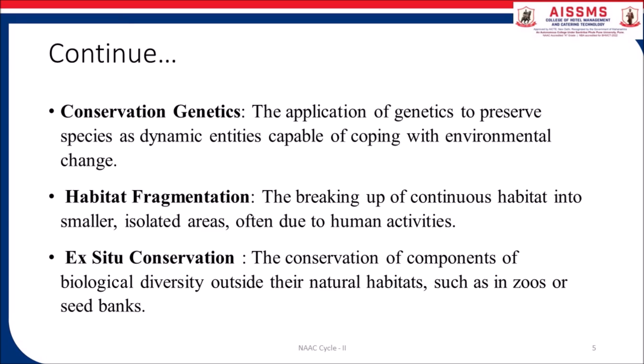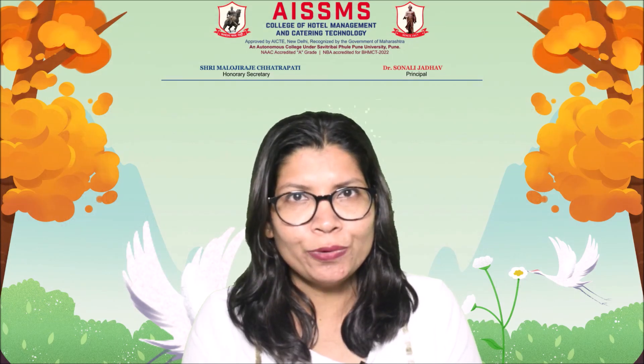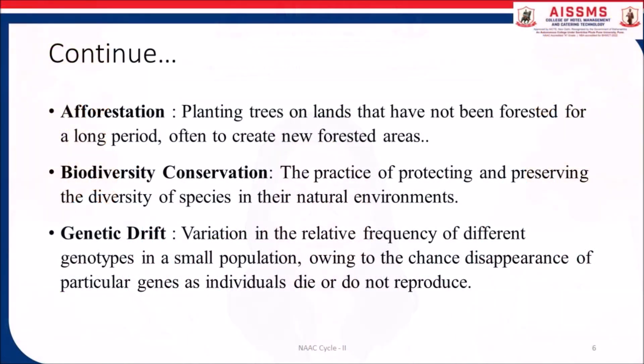Habitat fragmentation: the breaking up of continuous habitat into smaller isolated areas, often due to human activities. Ex-situ conservation: the conservation of components of biological diversity outside their natural habitats, such as in zoos or seed banks. Biodiversity conservation: the practice of protecting and preserving the diversity of species in their natural environment.